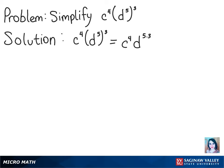Notice that we don't multiply the fourth power with c by 3, because it's not included in those parentheses that are being cubed. So after we have that, we can get our final answer of c to the fourth power times d to the fifteenth power.